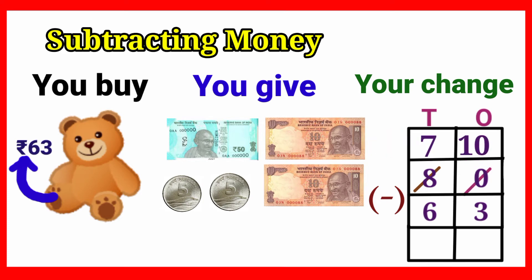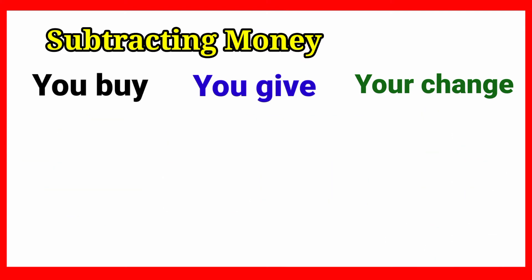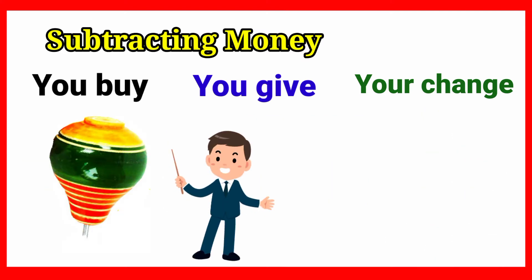Now the tens place: after borrowing, 8 becomes 7. So 7 minus 6 equals 1. Tens place answer is 1. So the total remaining change is 17 rupees. Answer: 17 rupees.